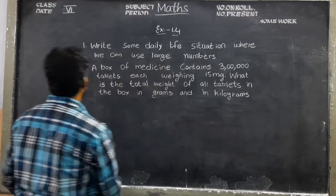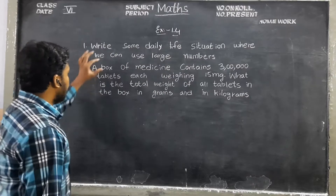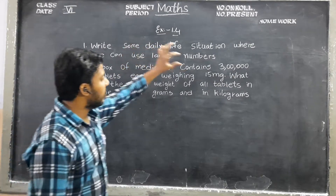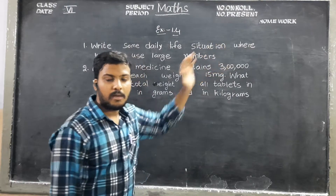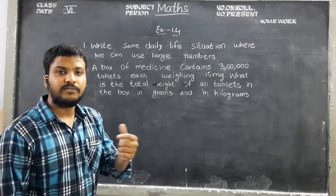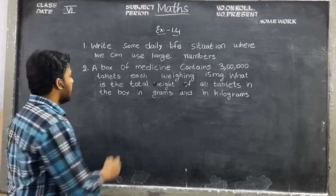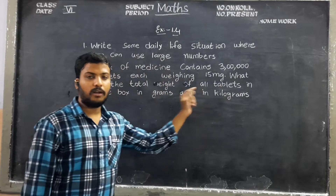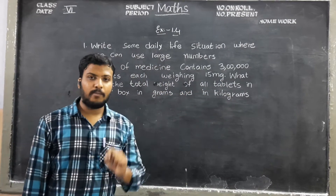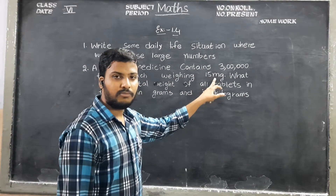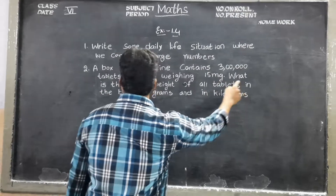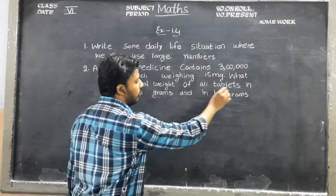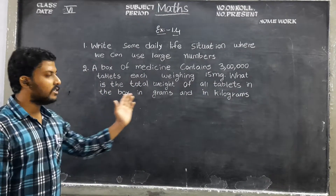A box of medicines. There is a box, and in that box there are medicines. The box contains 3 lakh medicines — 3 lakh tablets — and each tablet weighs 15 mg. What is the total weight of all the tablets in the box? We need to find the total weight in grams as well as kilograms.